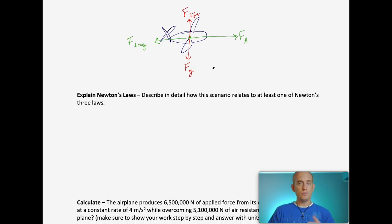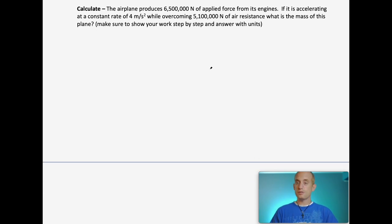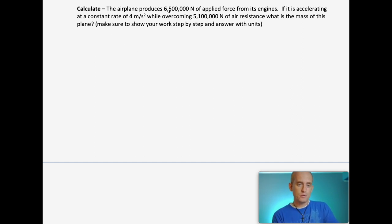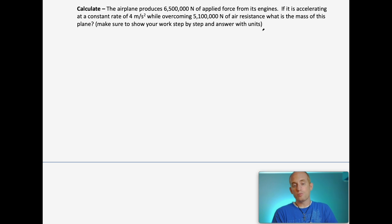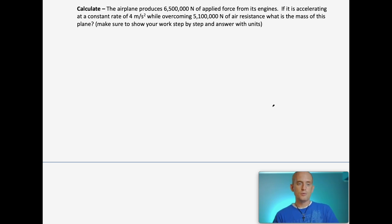Explain Newton's three laws however you'd like — any one of them is fine. Now the calculation: the airplane produces 6,500,000 newtons of applied force from its engines. It's accelerating at a constant rate of 4 meters per second squared while overcoming 5,100,000 newtons of air resistance. The question asks for the mass of the plane. Make sure to show your work and units.